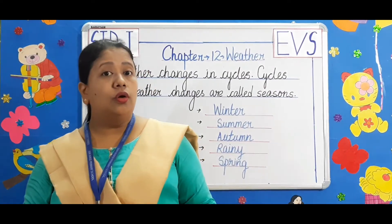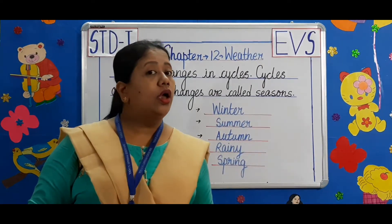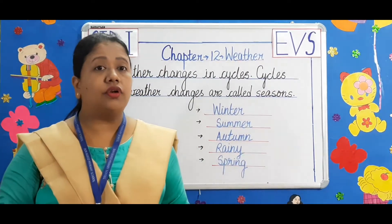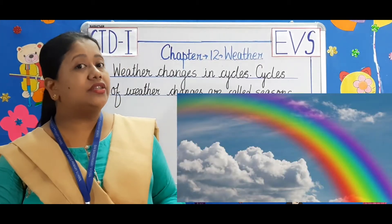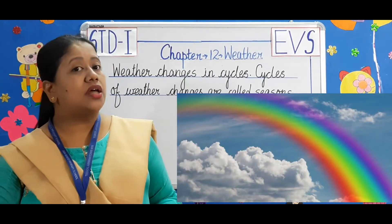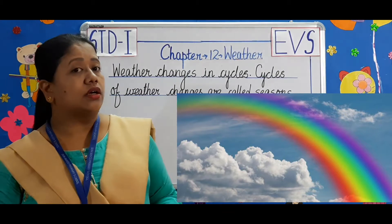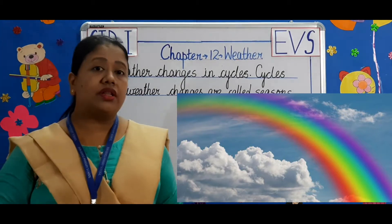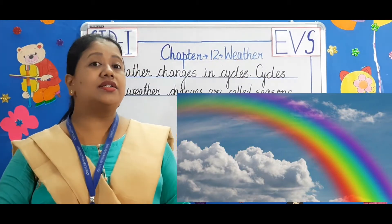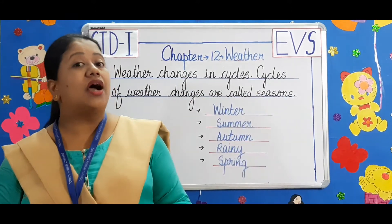Children, do you know what is a rainbow and why it is colourful? It is the sunlight that passes through the rain water and brings out all the colours of the rainbow.